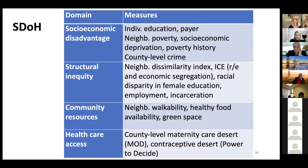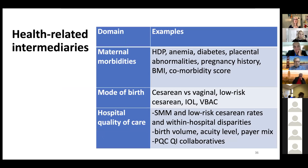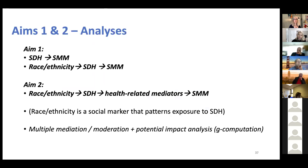We're looking at several domains of social determinants: socioeconomic disadvantage, structural inequity, community resources — which you can think of as built environment — and healthcare access. For health-related intermediaries, we'll look at a variety of morbidities, aspects of mode of birth from hospital discharge and vital records, and various metrics of quality of care at the hospitals where people give birth.